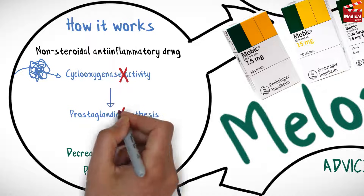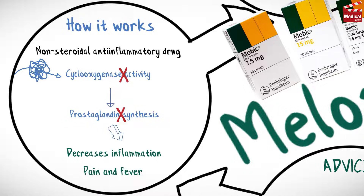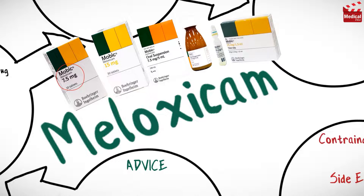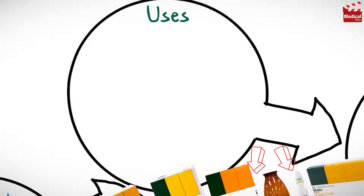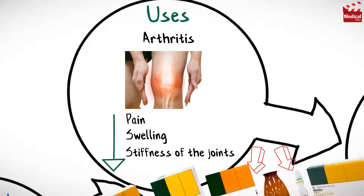Meloxicam is available as 7.5 and 15 milligram tablets, and also as oral suspension and injection. It is used in the treatment of arthritis, reducing pain, swelling, and stiffness of the joints.